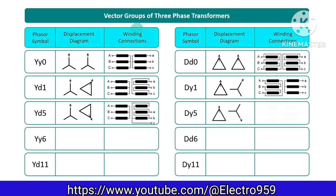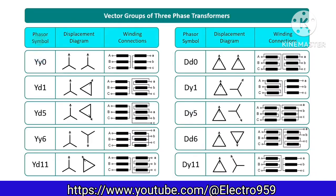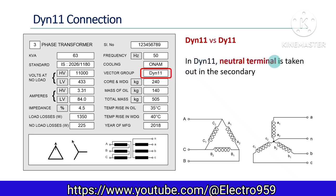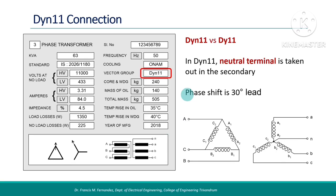Here we have a summary of all the vector groups discussed. The phasor symbol, displacement diagram, and connections in each case are shown. Going back to the transformer nameplate seen earlier, the vector group is given as dyn11. The difference from DY11 is that it has the neutral point of the secondary brought out as a terminal, and the connection diagram is changed accordingly — the neutral point is added. All other things, including the phase shift, remain the same. This gives an idea of what vector groups are in three-phase transformers.